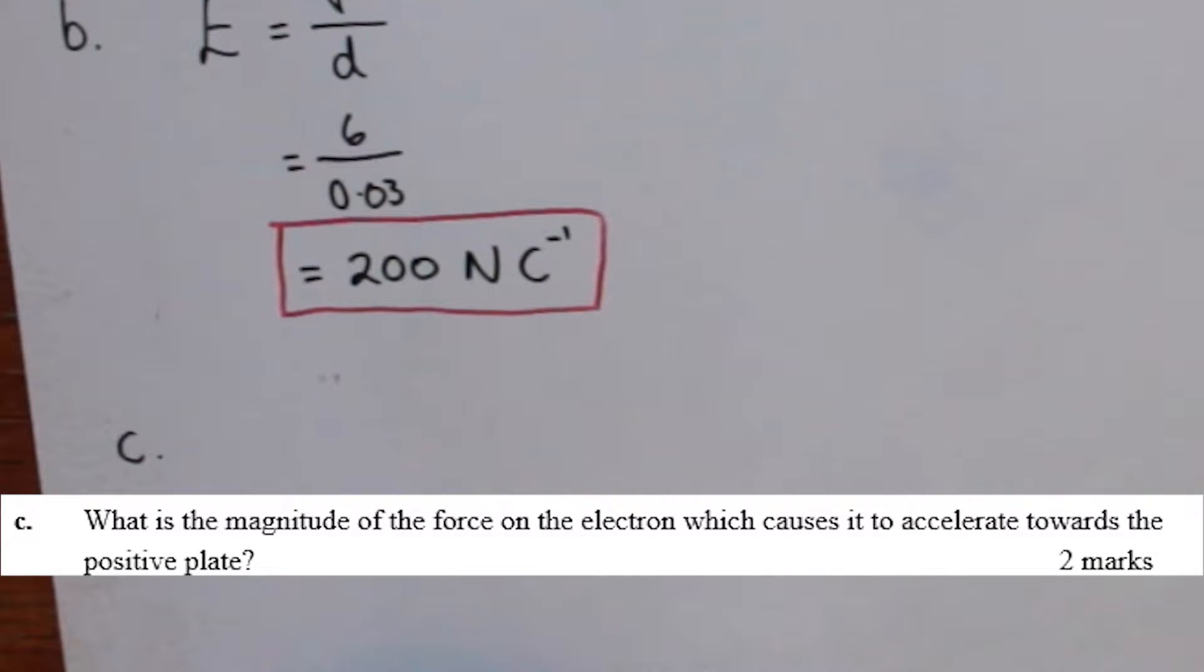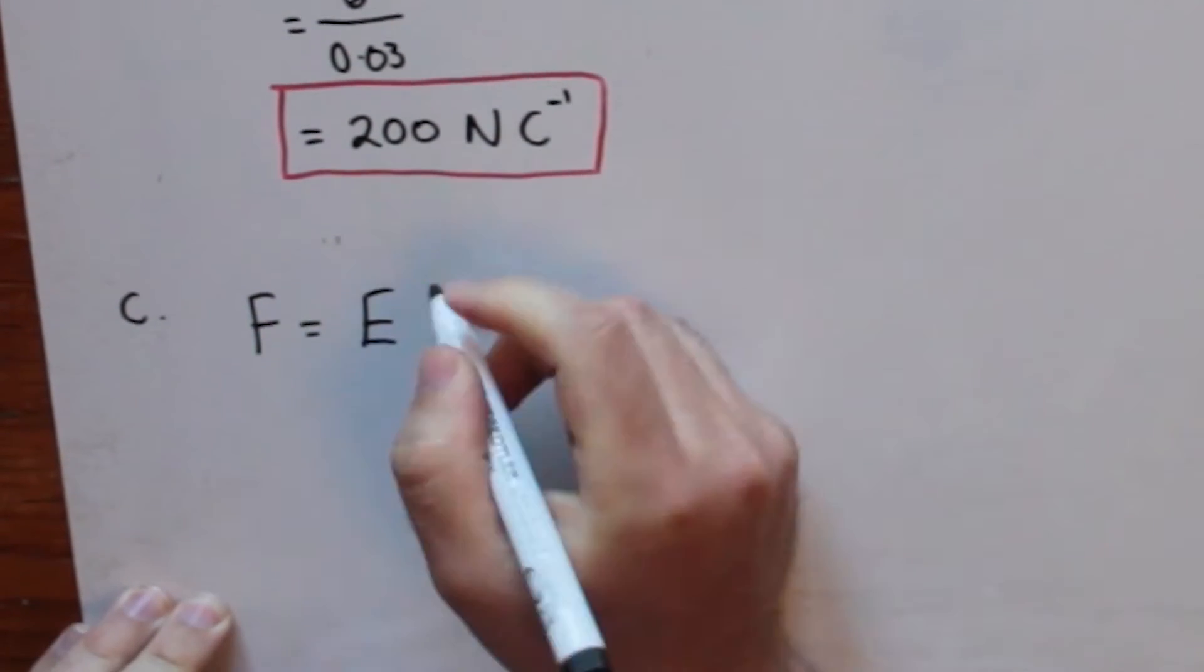Part C, what is the magnitude of the force on the electron which causes it to accelerate towards the positive plate? The force on a charged particle is given by the electric field multiplied by the magnitude of the charge.